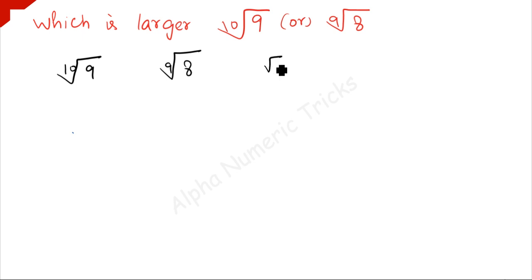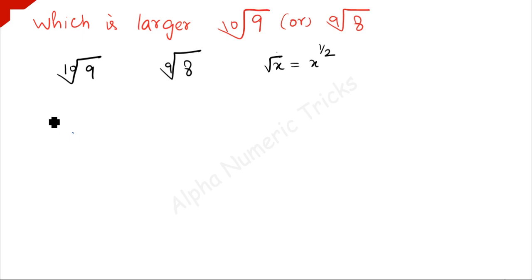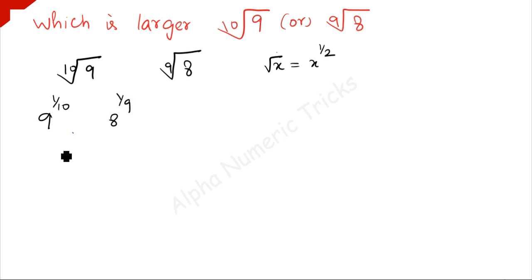You know that the square root of x can be written as x to the power 1/2. In the same way, the 10th root can be written as x to the power 1/10. So we can write 10th root of 9 as 9 to the power 1/10, and similarly the 9th root of 8 as 8 to the power 1/9.